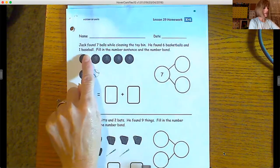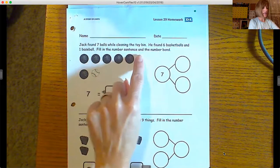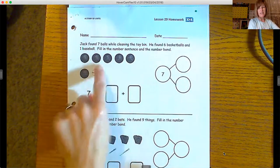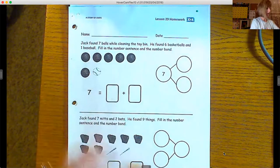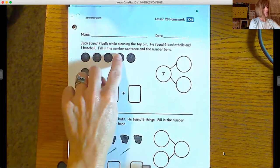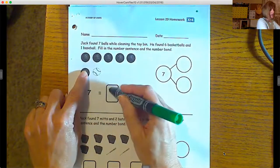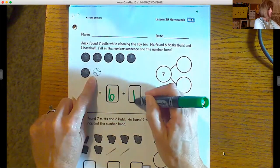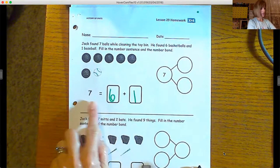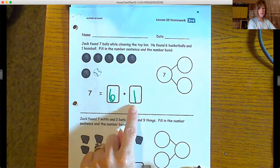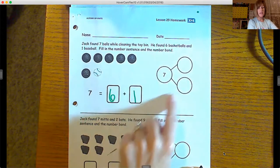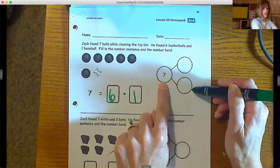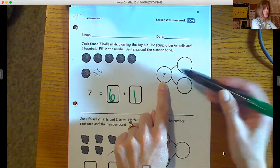He found six basketballs and one baseball. Fill in the number sentence and the number bond. So even though it's hard to tell, these are the basketballs, so we'll count one, two, three, four, five, six. So there's six basketballs and one baseball. So this has seven equals six plus one, and then we just have to fill in our number bond again.